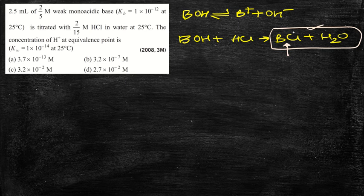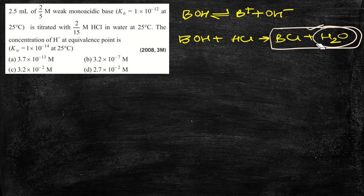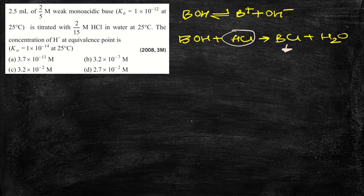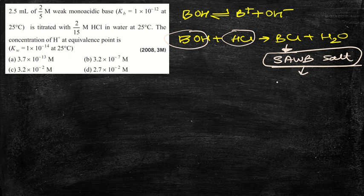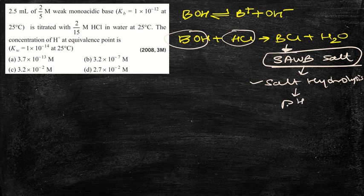If we were just told that BCl is taken in water and asked for the H⁺ ion concentration, it would be the same problem. Since both react completely, it is a salt-and-water situation. BCl is a salt made from a strong acid and a weak base — a strong acid-weak base salt. To find the pH, we will use the concept of salt hydrolysis, and from pH we can find the H⁺ ion concentration.